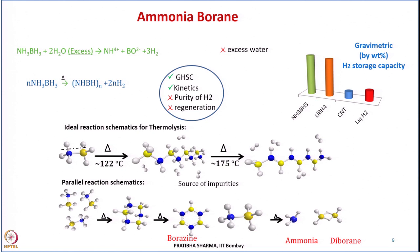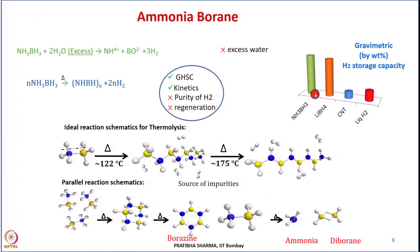Another class of materials that can be used for hydrogen storage are chemical hydrides — one example being ammonia borane. Like complex hydrides, ammonia borane can react with water producing hydrogen; however, it again forms borates which are more stable, making it difficult to regenerate and requiring excess water. Alternatively, this material can undergo thermolysis to produce hydrogen.